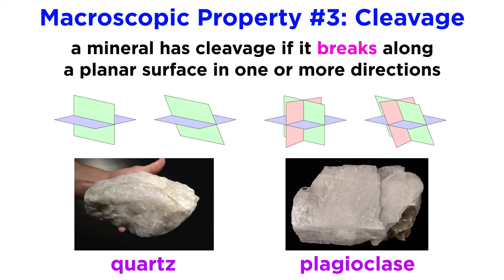Two of the most common minerals in Earth's crust, quartz and plagioclase, can also look similar in color and luster, especially to the untrained eye. But plagioclase has two directions of cleavage at 90 degrees, in contrast with quartz's lack thereof.